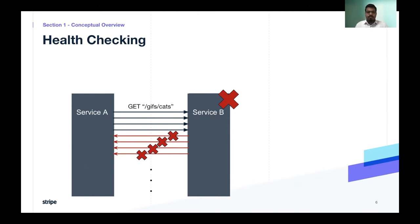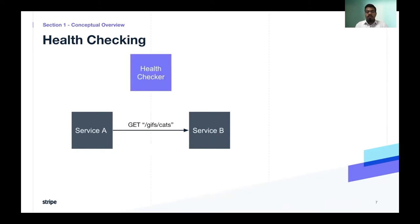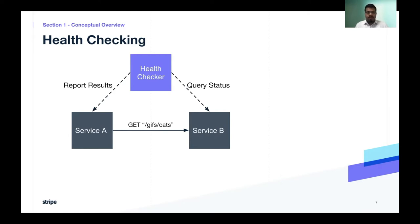What can we do better? We could introduce a new component called the health checker, and the health checker could basically do two things. It could first query for the status of the server — that is Service B in this case — and then report the same to the client, which is Service A. Service A can then make a decision on whether to actually make a request to Service B if it is healthy, or simply hold back or act differently if Service B is down.